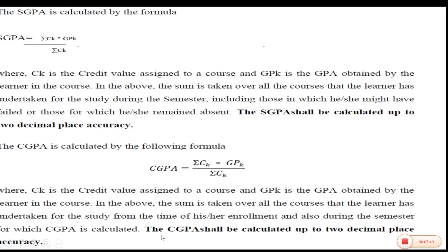There is a rule that CGPA shall be calculated up to two decimal places accuracy, meaning the third decimal will be rounded off to the second decimal place. Just a point of precaution: this is not GPA, it is only grade point, because we are not using the average here.